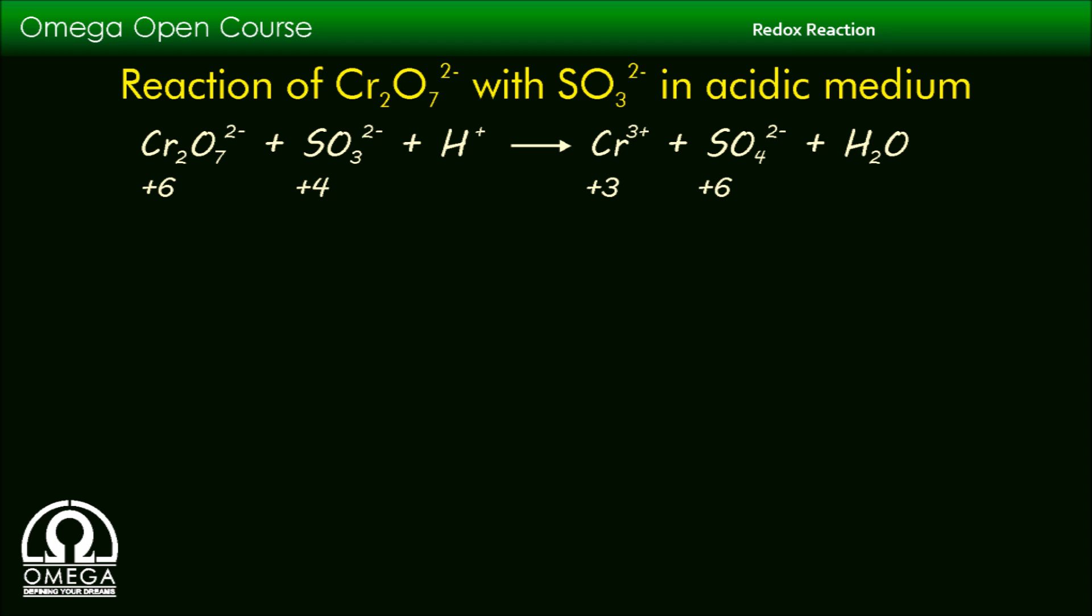Since the oxidation number of sulfur increases it is undergoing oxidation, and the oxidation number of chromium decreases so it is undergoing reduction.